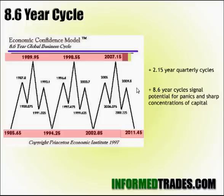Similarly, on the 8.6-year cycle — a more significant event than the 2.15-year quarterly cycle — one of those events occurred towards the end of 1989, which is when the Nikkei in Japan peaked and before it entered more than 20 years of decline. Also, the first quarter of 2007 was when the U.S. stock market reached a peak before the crash.